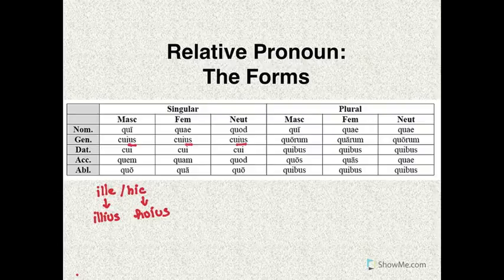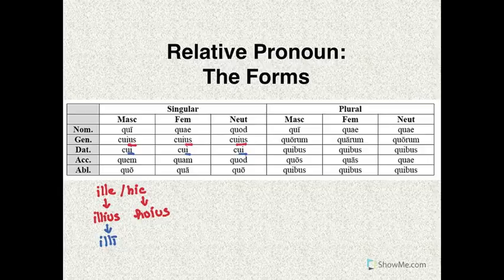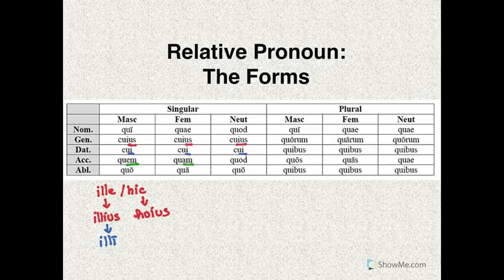In addition, you might have also recognized the dative singular -i ending found at the end of cui. For example, ille — the dative singular is illi. So there's a similarity there. For the accusative singular, you might have recognized the -em ending, which we see in the third declension, and the -am ending, which we've seen in the first declension. And then for the ablative singular, we've seen this quo, qua, quo pattern before in the first and second declension.